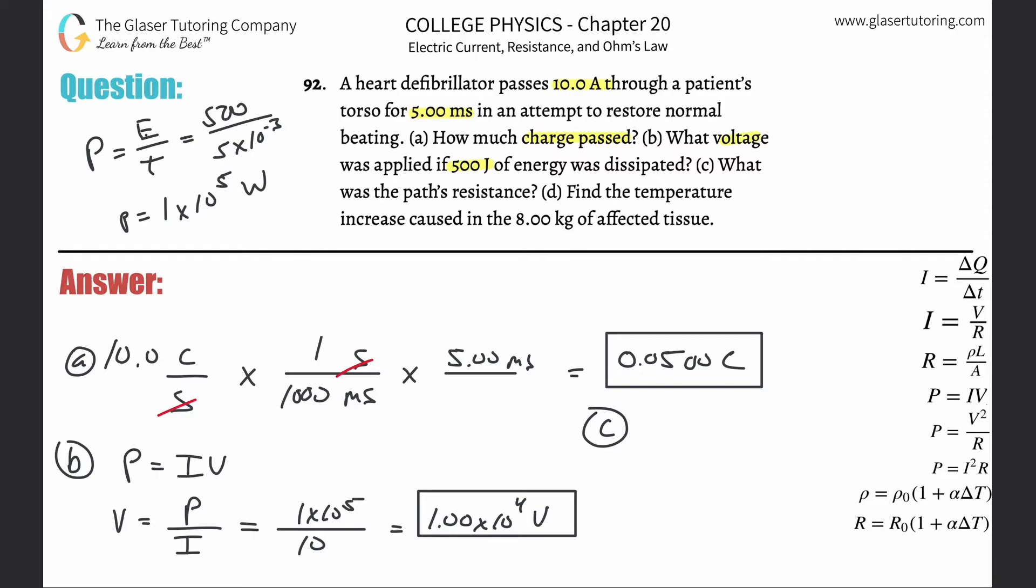Letter C, what is the path's resistance? We can figure this out in several ways. It really does not matter. What I'll do here is, why don't we use path's resistance? So why don't we do this? Power is equal to voltage squared divided by resistance. Simply cross-multiply this.